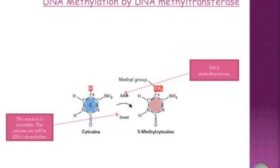DNA methylation is used to silence transcription of a gene, as the presence of the methylated cytosine along the DNA strand is interpreted by the cell as a signal that the DNA modified in this way should not be transcribed. Any genes targeted in this way will essentially become switched off.